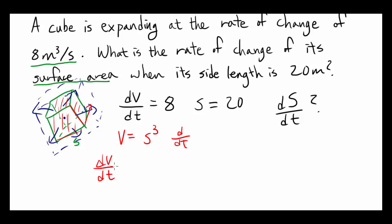Derivative with respect to time of S cubed is 3S squared, then you have to multiply by dS/dt because you are differentiating with respect to time.